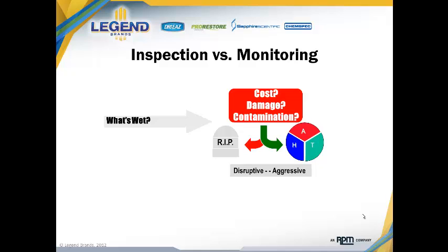That begins with asking the first question in inspection and monitoring: just knowing what's wet. It sounds like a really simple question, but in reality it can be quite complicated and is very often not completely addressed. Knowing what's wet requires that the restorer or technician know more than just something about water — they have to know something about the building materials and the assemblies. The common vernacular in the contractor world is you have to understand the components, not just the assembly.